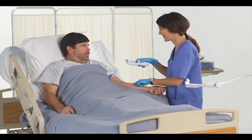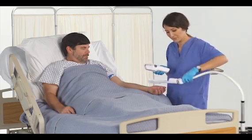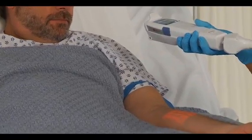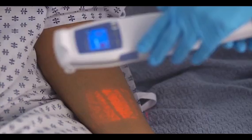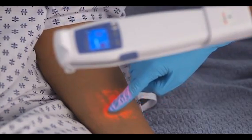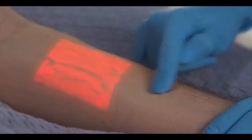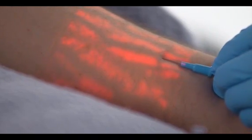Once you locate the vein you want to stick, you can easily place the AccuVein AV400 in the hands-free accessory. This will allow your hands to be free to perform the venipuncture. Always leave the AccuVein AV400 vein display light on when starting the venipuncture. This will allow you to assess the vein as you stick.